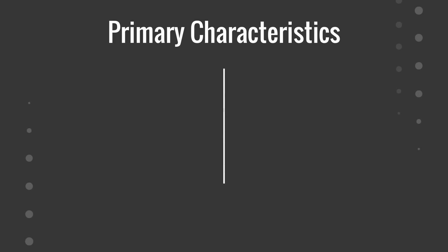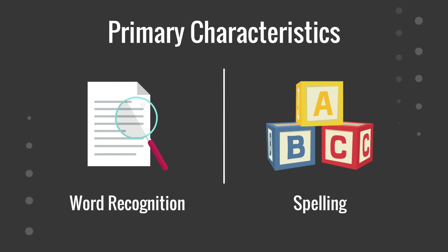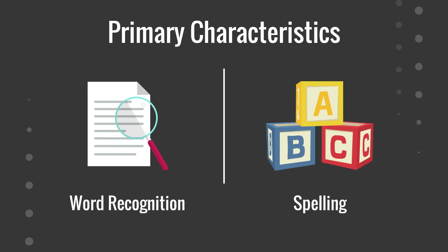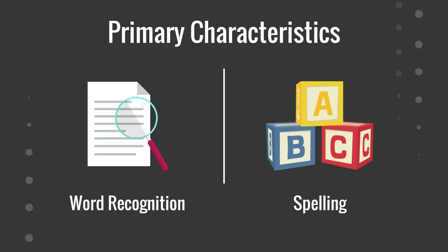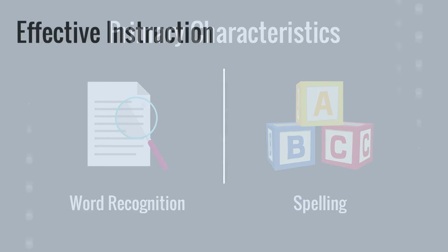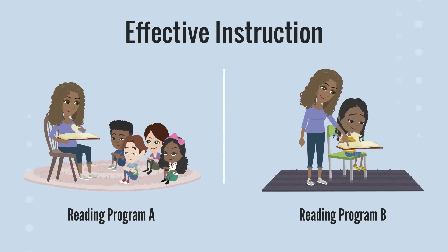As we have reviewed in prior videos, students with dyslexia experience difficulty with word-level reading. These students have difficulty attending to the small units or parts of words. But what does instruction in small units look like? Effective instruction can look different across different decoding programs or approaches, but they will share certain elements.